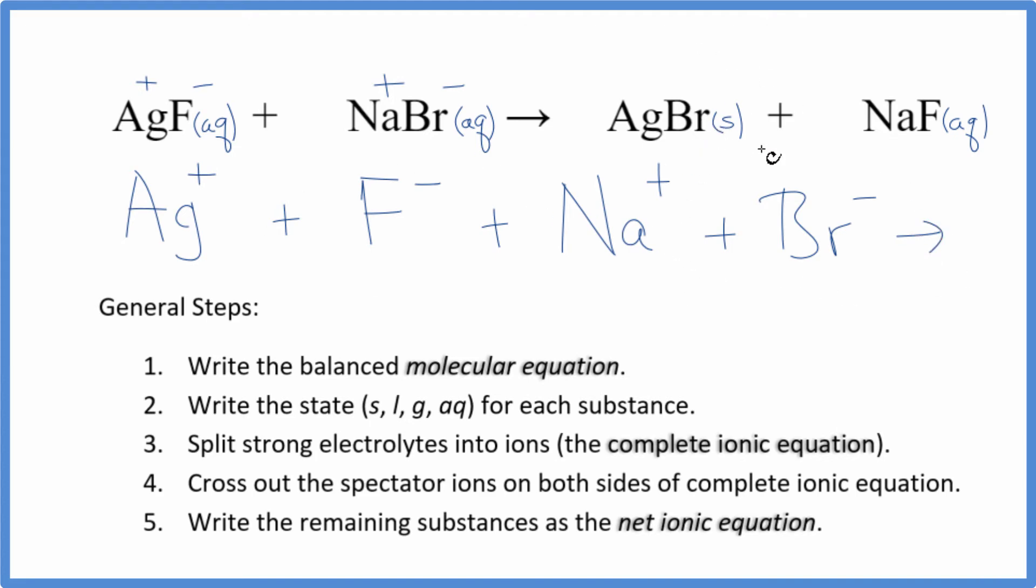For the products, we don't split apart solids. So we'll have AgBr, and then sodium we said was positive, fluoride ion negative, plus Na+, plus F-. So these are the reactants. This is the complete ionic equation.